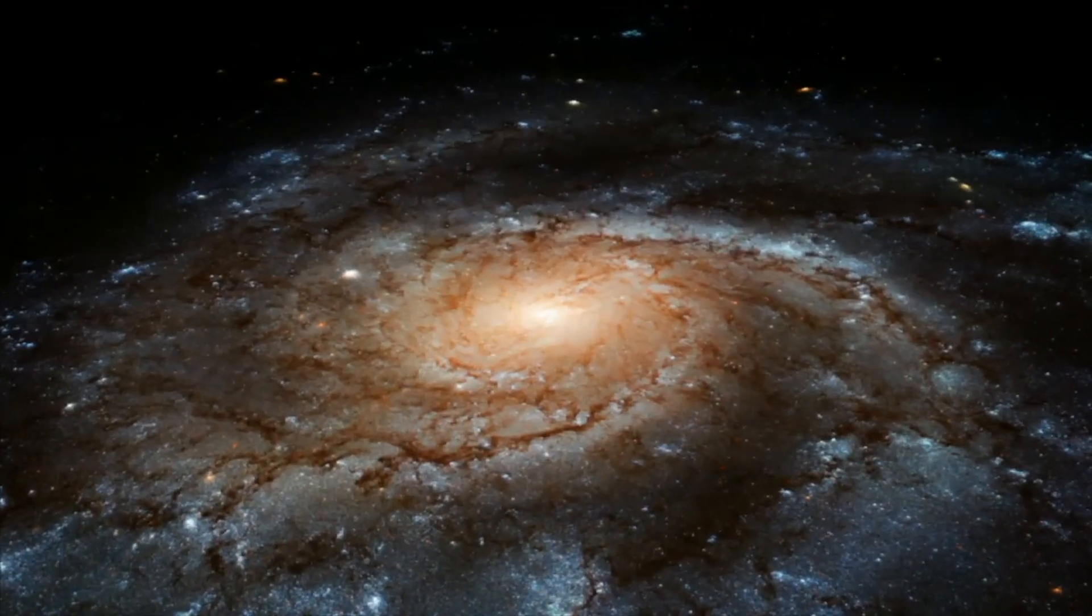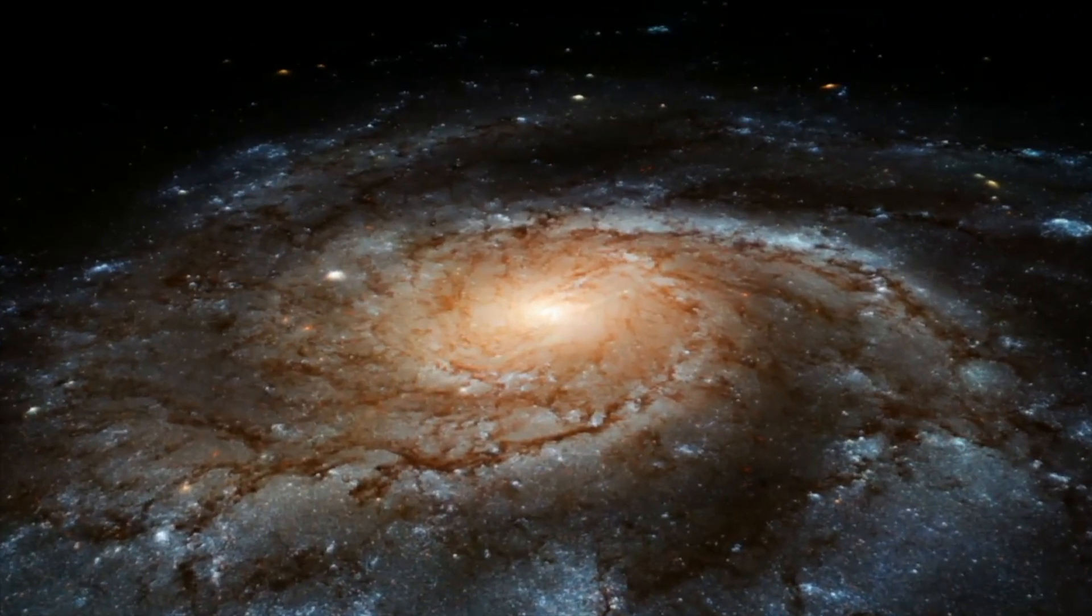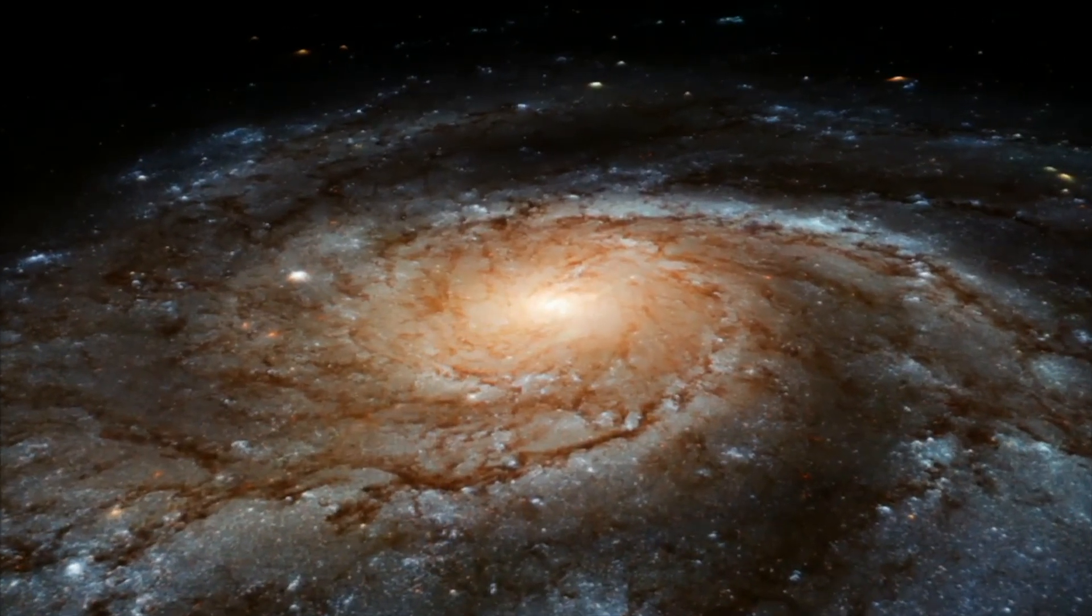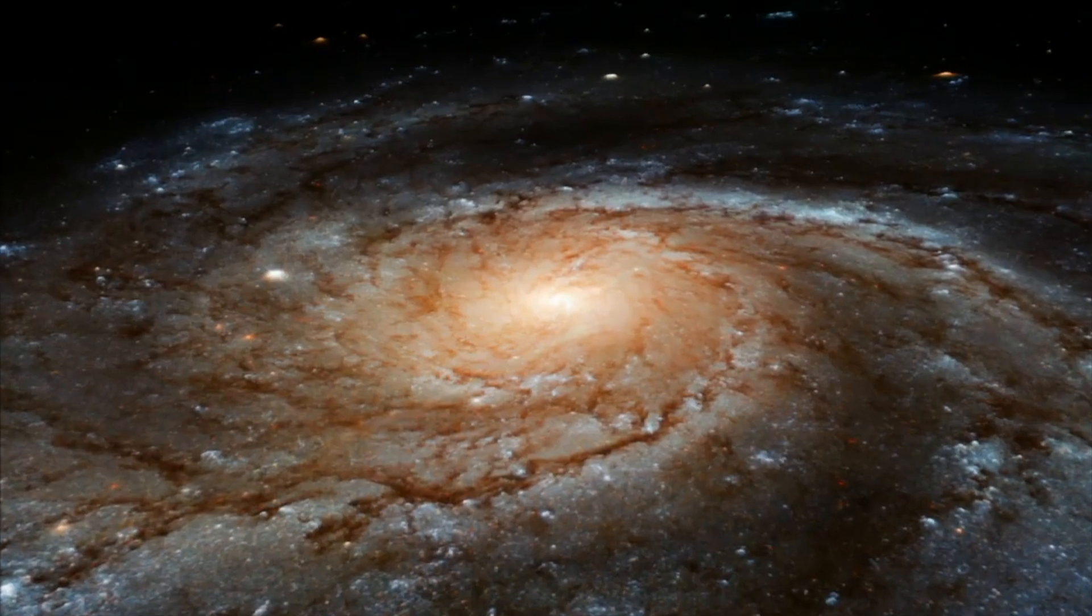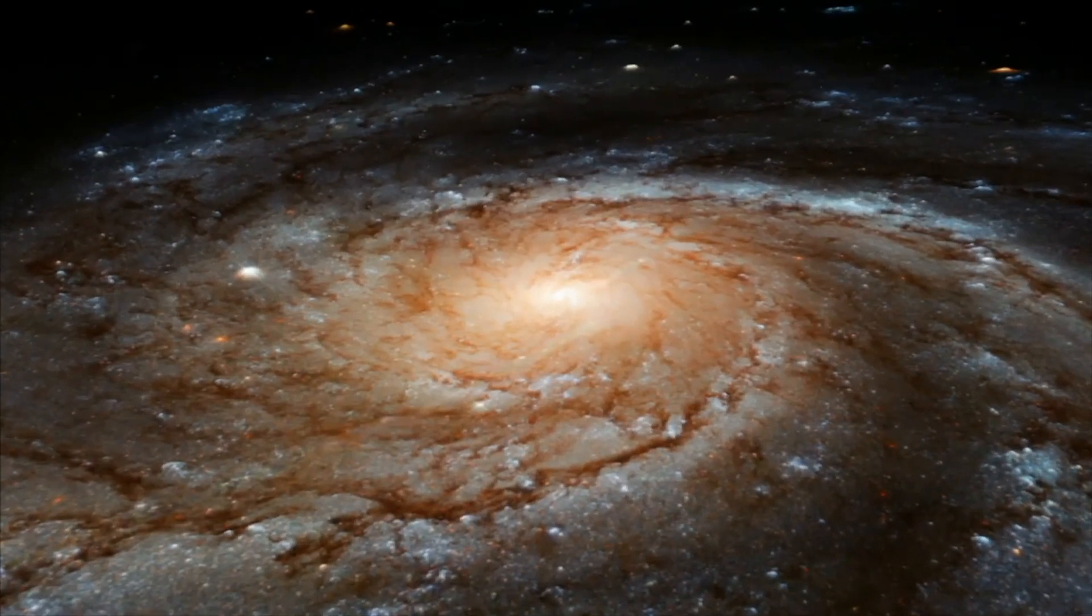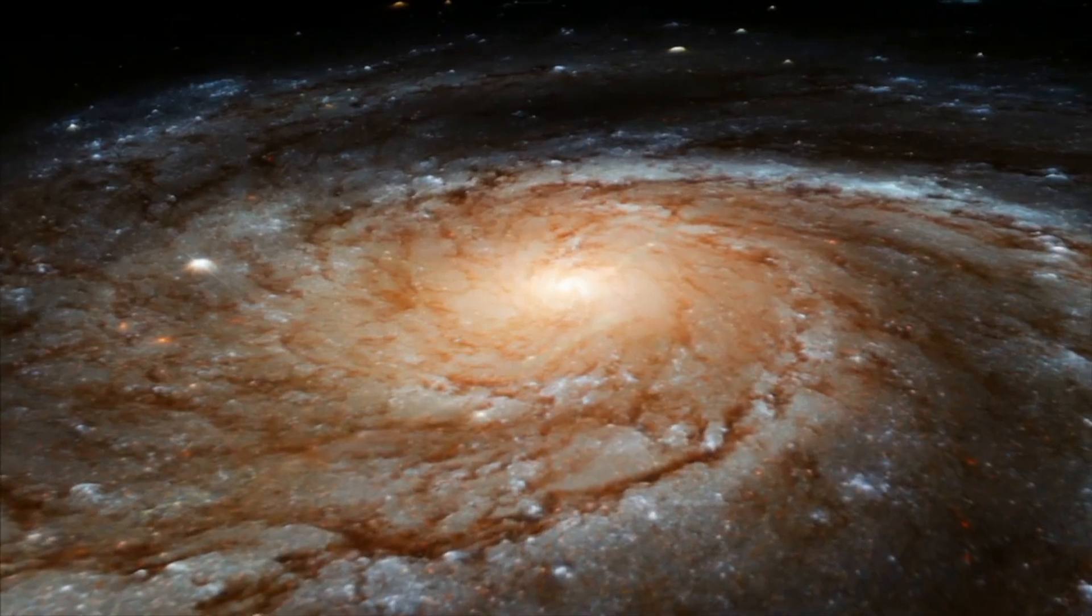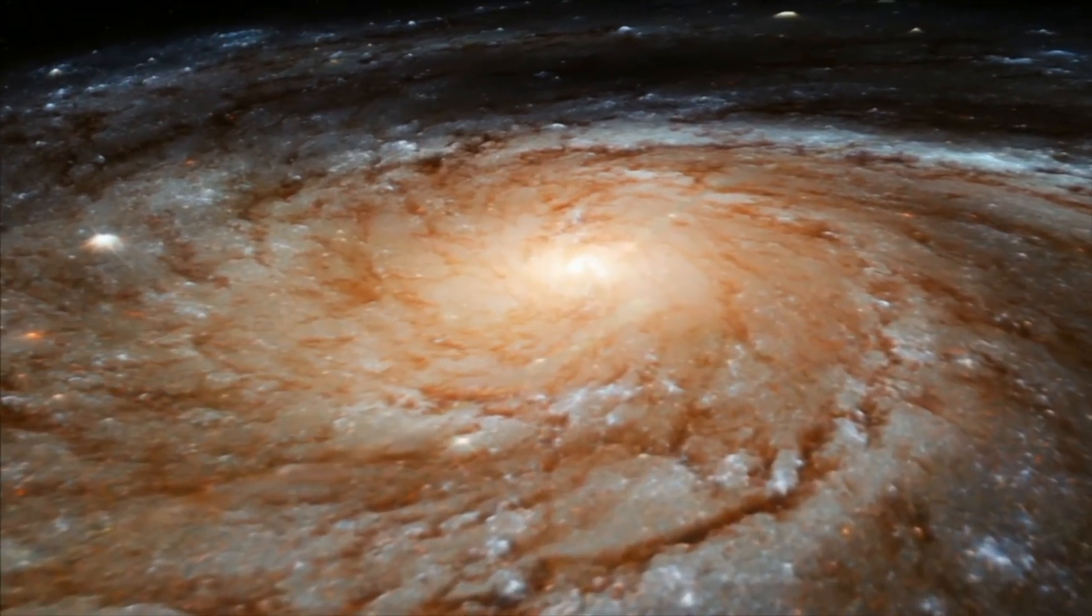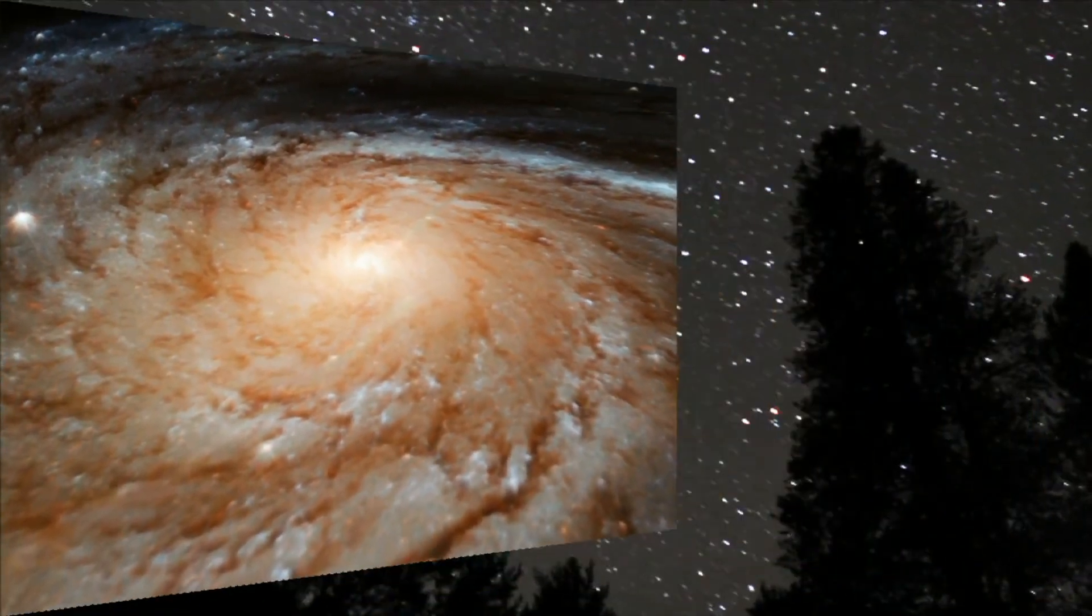Spiral galaxies have a lot of gas, dust, and newly forming stars. Since they have a lot of hot young stars, they are often among the brightest galaxies in the universe. About twenty percent of all galaxies are spirals.